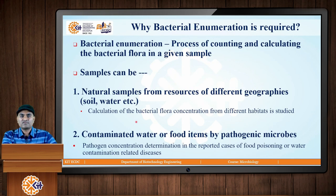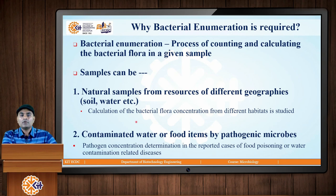Bacterial enumeration is a process of counting and calculating the bacterial flora in a given sample. The samples can be natural samples from different resources of different geographies such as soil, water, etc., where the calculation of bacterial flora is needed to study the habitat. The second type of sample is contaminated water or spoiled food items where the pathogen concentration needs to be studied.